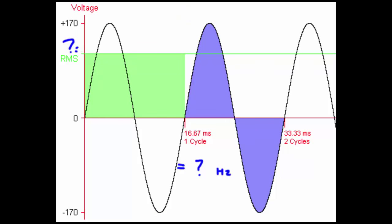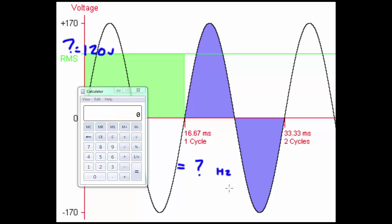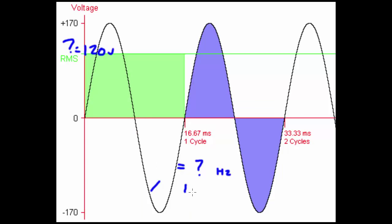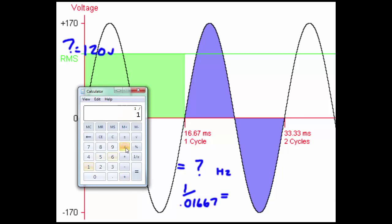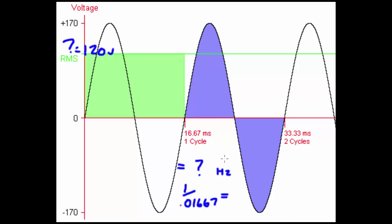So that question mark is 120 volts RMS. What's the frequency? Frequency equals 1 over the time — 1 divided by 0.01667 equals 59.98, otherwise known as 60 Hz. What we're representing here is a typical wall outlet sine wave.